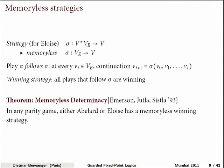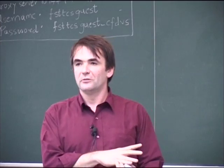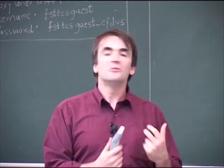Thinking in terms of graphs: a memoryless winning strategy for Alois is a selection of one outgoing edge from each of her positions. Alois has a winning strategy if she can select one edge from each of her positions such that every cycle formed in the remaining graph has an even minimum priority. For Abelard, he can choose one successor from every node belonging to him such that every cycle has an odd minimum. It is quite subtle that either one player or the other is always in one of these two situations.